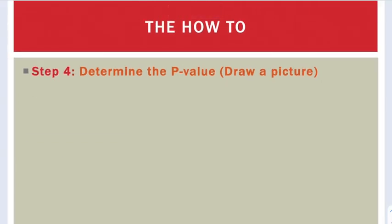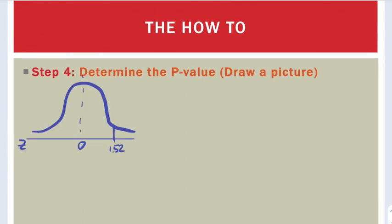Next, we want to determine the p-value. We start by drawing a picture. Remember, this picture is going to have z as its axis. And the middle is always 0. And we're going to put our test statistic, 1.52, on the axis.